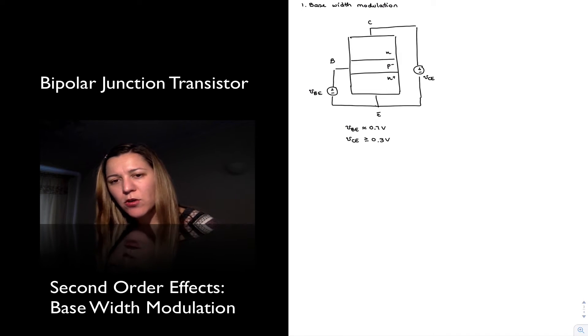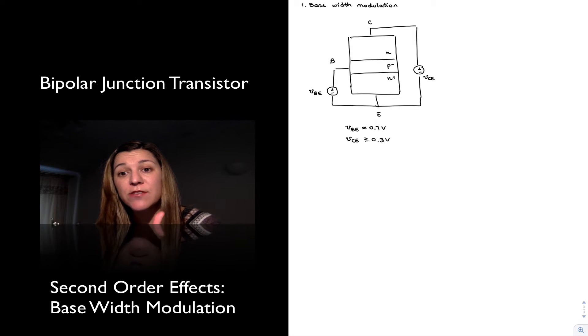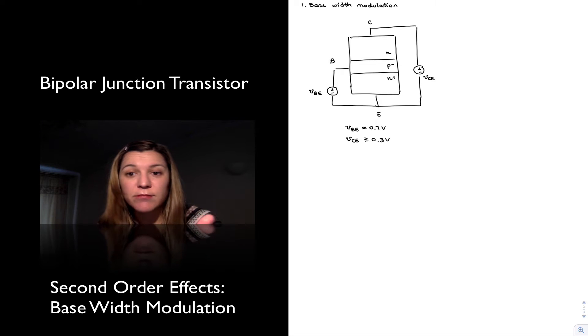Now, if we go back to the operation of the transistor we have in the linear region, the base-emitter junction was forward biased. The collector-base junction was reverse biased. Now, if you remember from the operation of the PN junction or of the diode, there is a depletion region across a PN junction. And in the case of a reverse biased PN junction, the depletion region extends further into the PN areas, the higher the reverse bias voltage we apply.